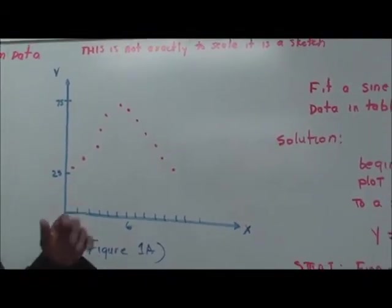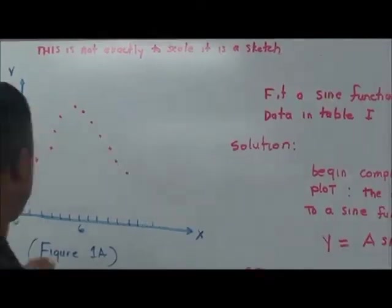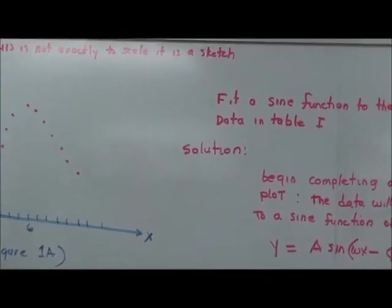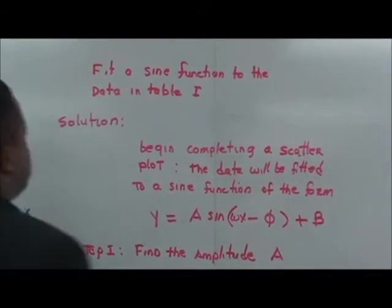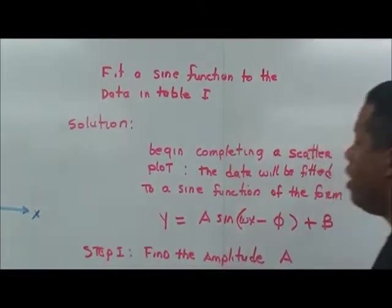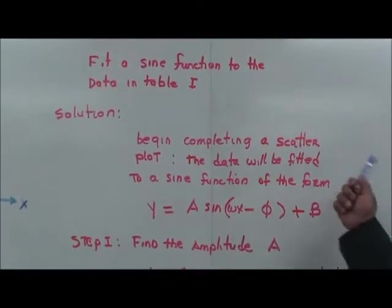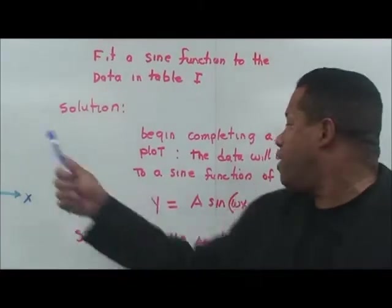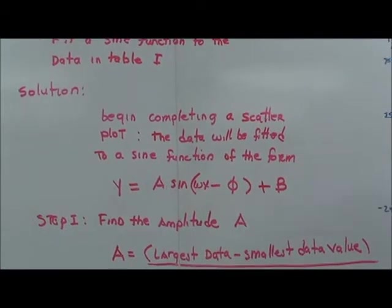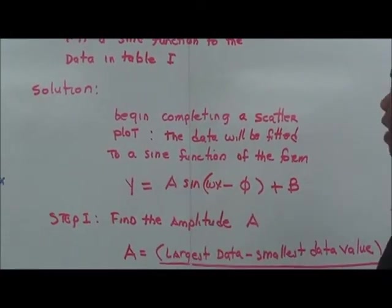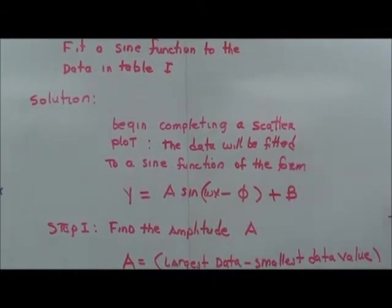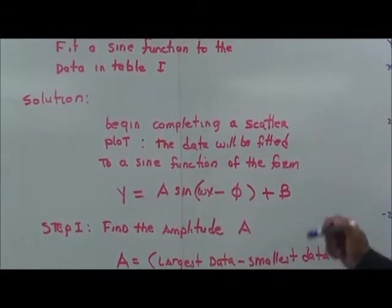So, what we want to do is fit a sine function data in actually table 1. See, this is table 1 right here. So, we want to fit the sine function to the data from that table. And we want to begin by completing a scatter plot, which we have, and will be fitted to the sine function of the form. Remember this? y is equal to a times sine omega x minus phi plus b.